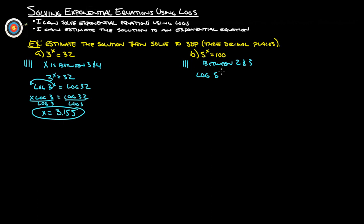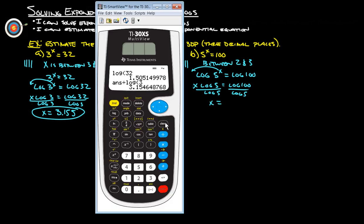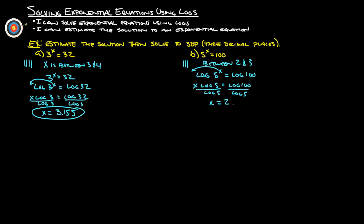So to solve this thing here, take the log of both sides. Log of 5^x equals log 100. Move the x out front. x log 5 equals log 100, and then divide both sides by log 5. And we get that x equals log 100 divided by log 5. So log 100, which should equal 2, because that's saying 10 to the second power gives us 100. Anyway, divide that by log of 5, and we get 2.861 to 3 decimal places.